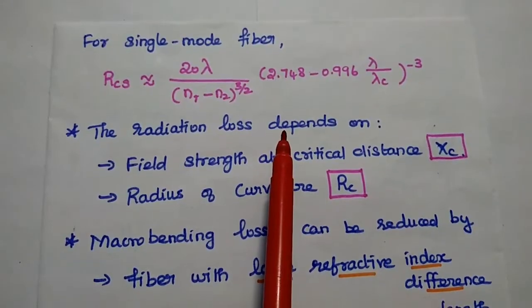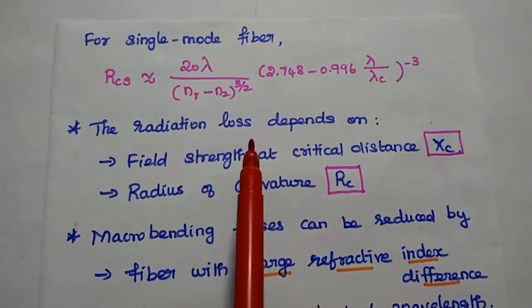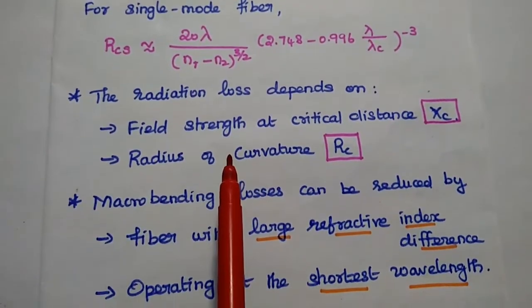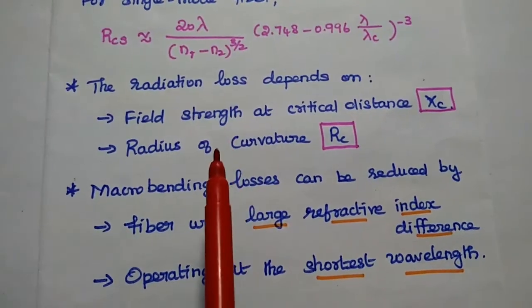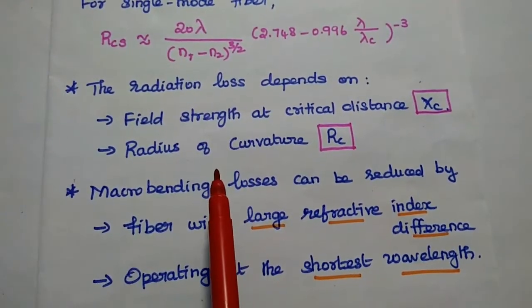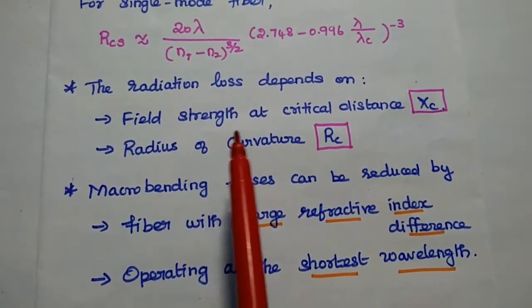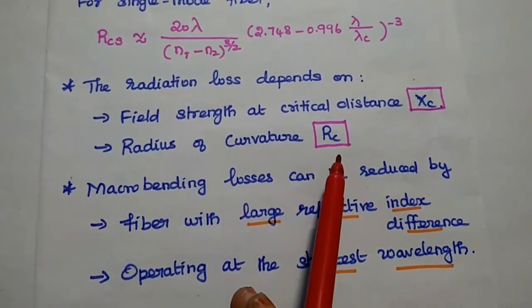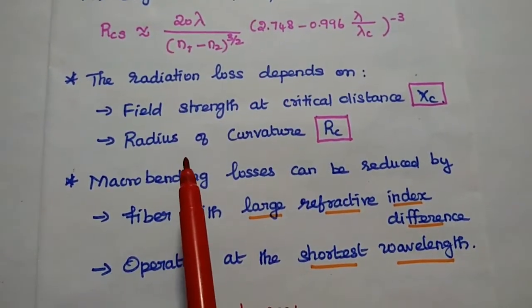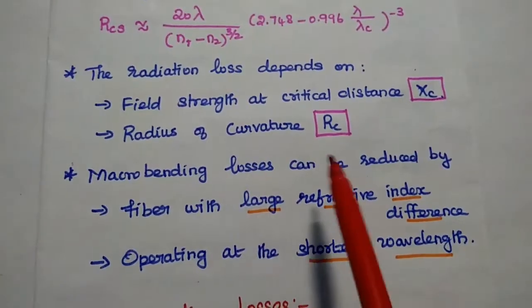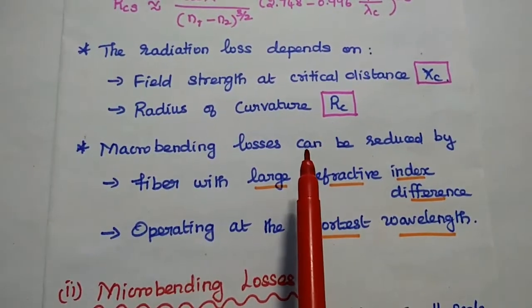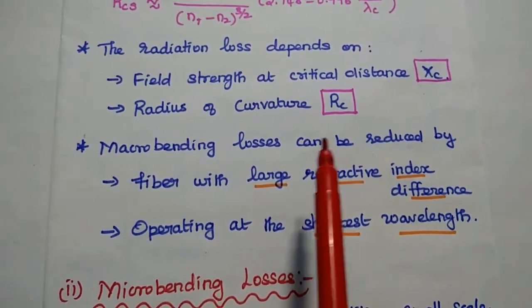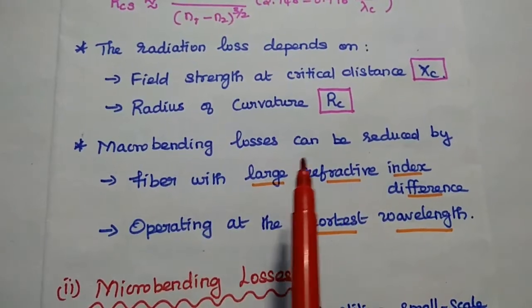Here, lambda C is nothing but cutoff wavelength. This macro bending radiative loss depends on two parameters. One is field strength at critical distance XC. The next one is radius of curvature. These two parameters are important to define macro bending losses in optical fiber.